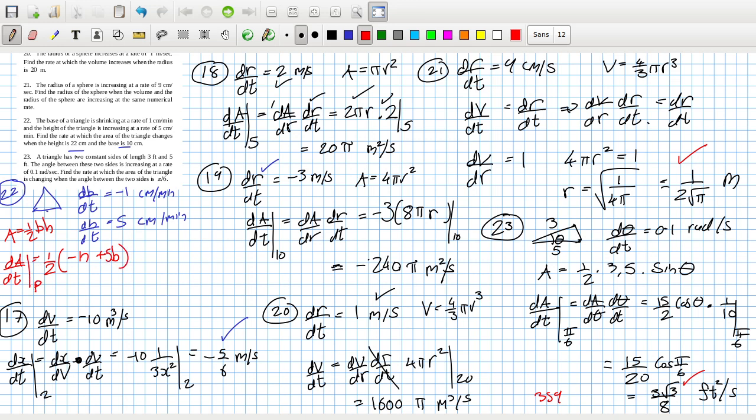So, when we put in the point, it will be 5 times the base, so 5 times 10 is 50, minus the height, which is 22, which is 28, and then divide it by 2, which is 14. 14 centimetres squared per minute, using the product rule.